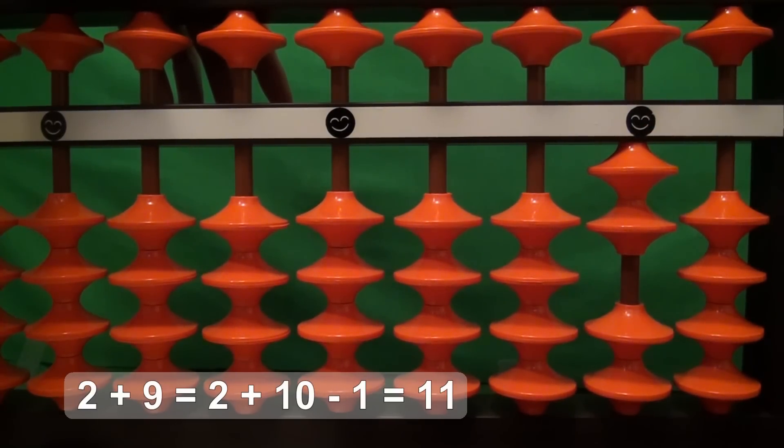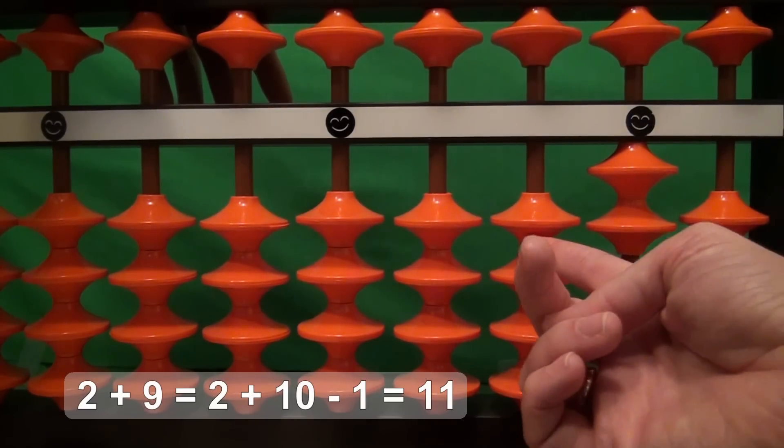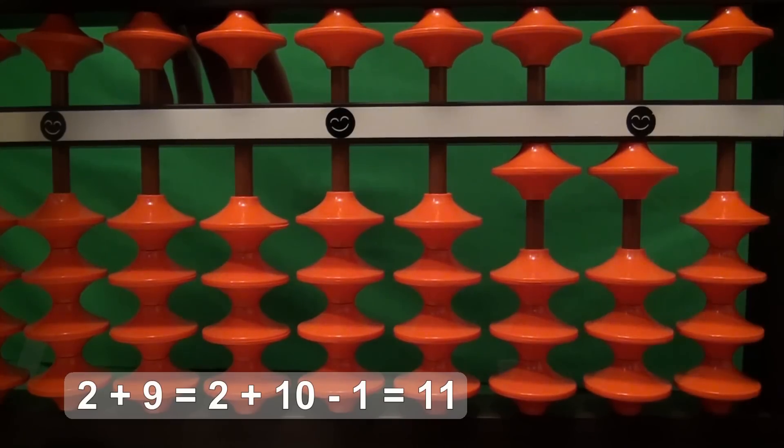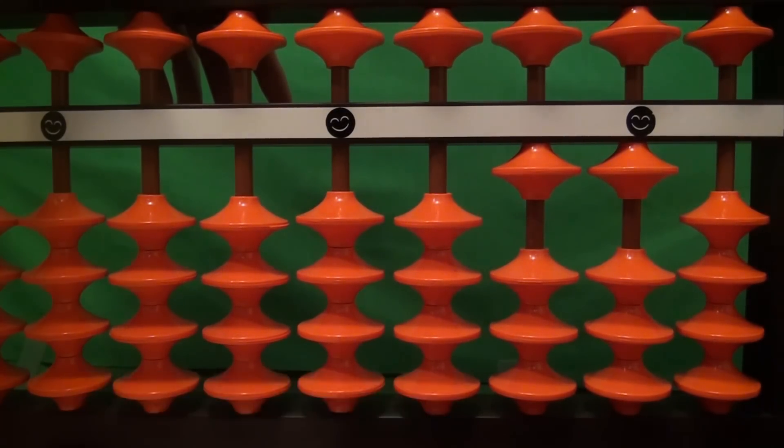So we want to think of adding 9 as adding 10 and taking away 1, because 10 minus 1 is equal to 9. So add 10, take away 1. The answer is 11. 2 plus 9 equals 11.